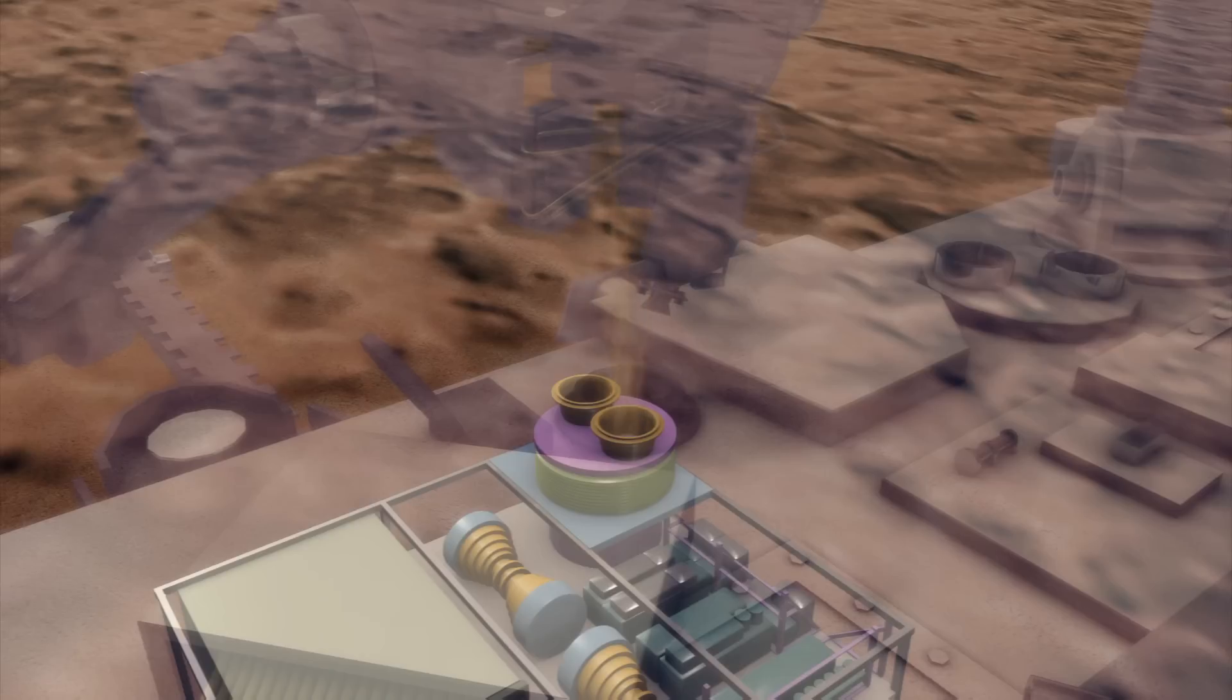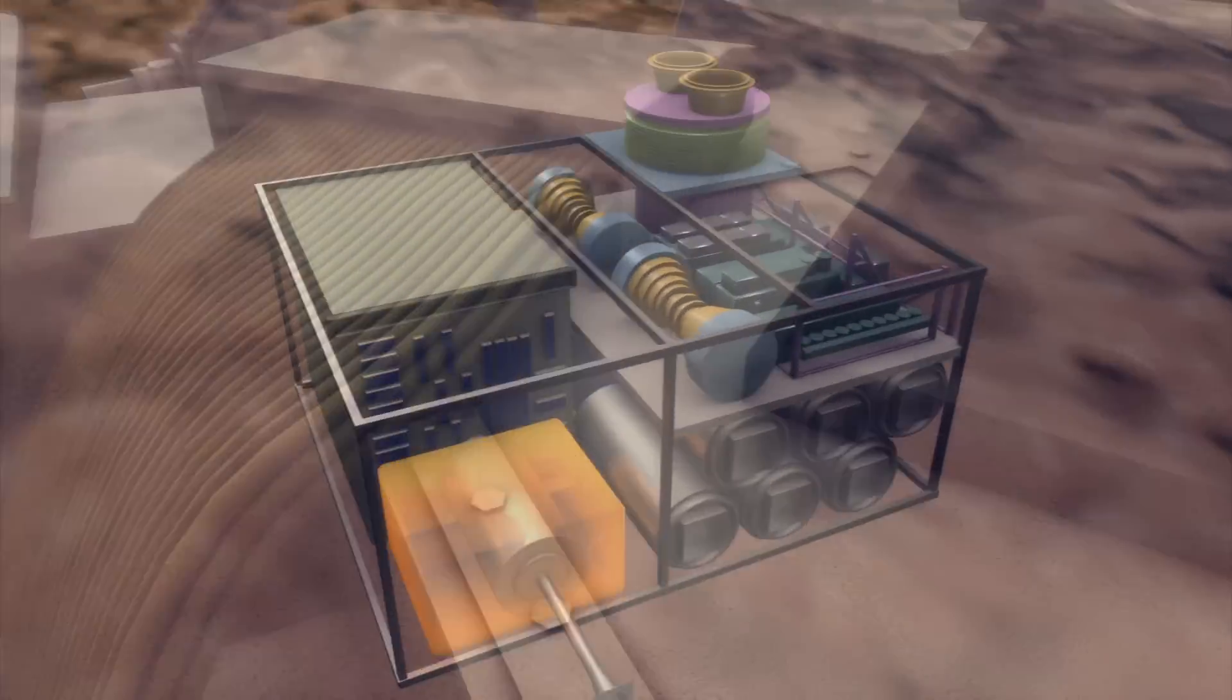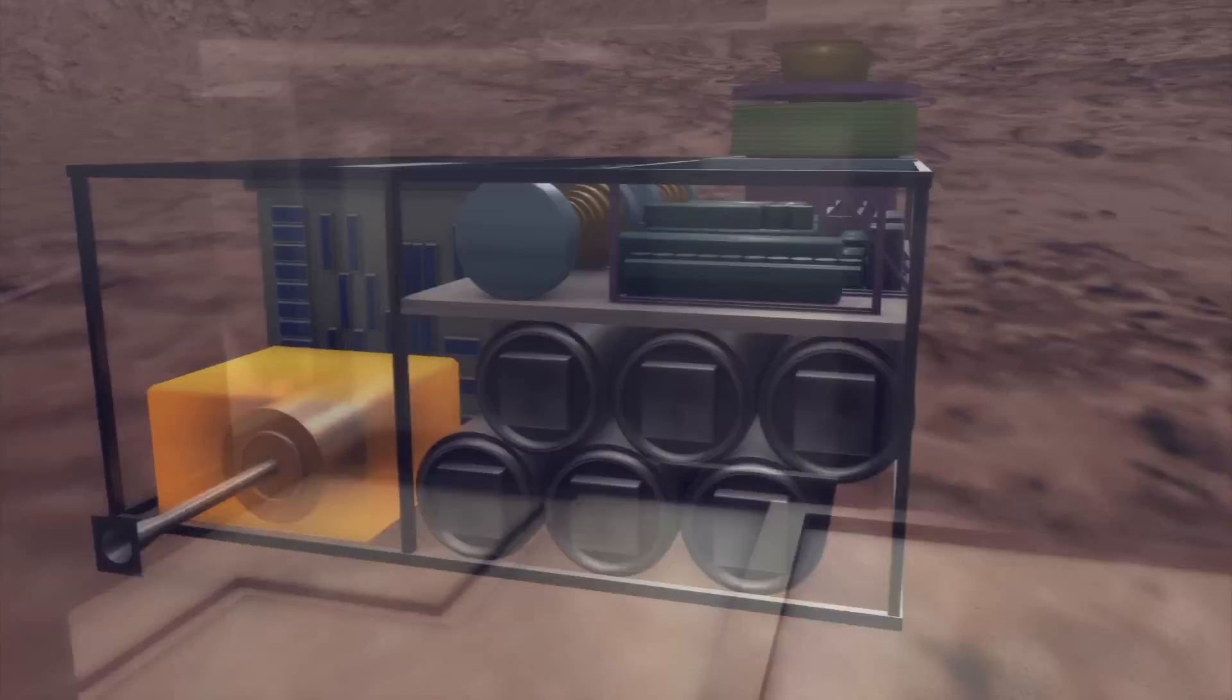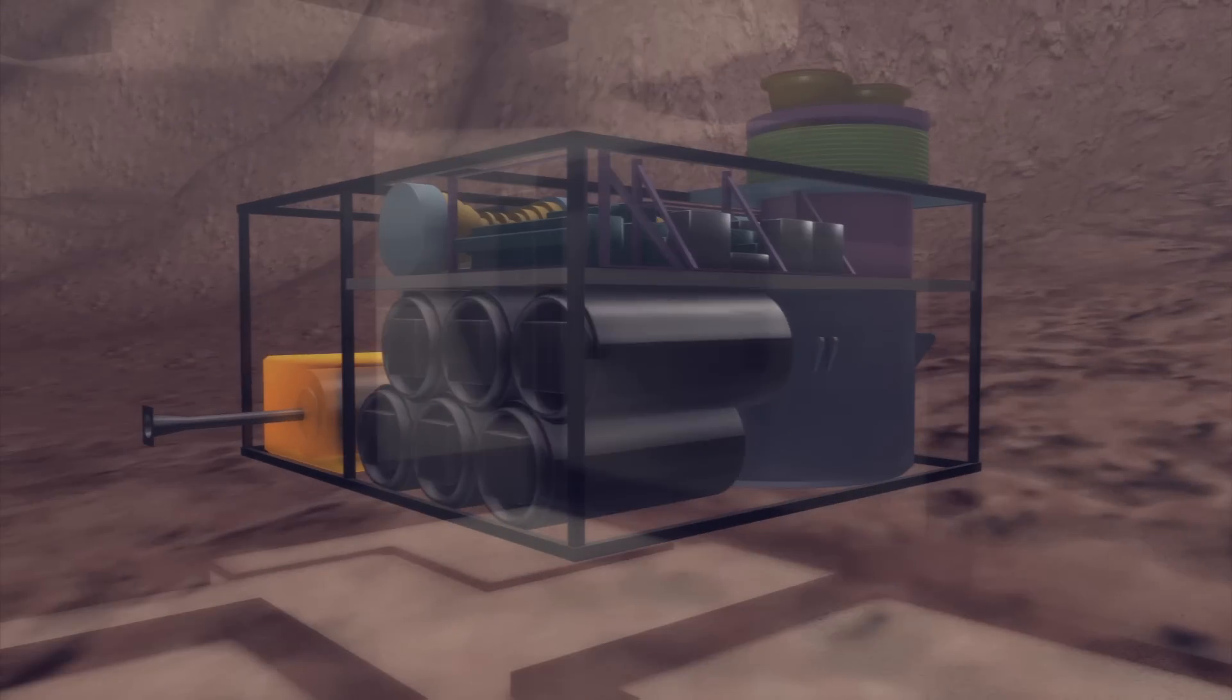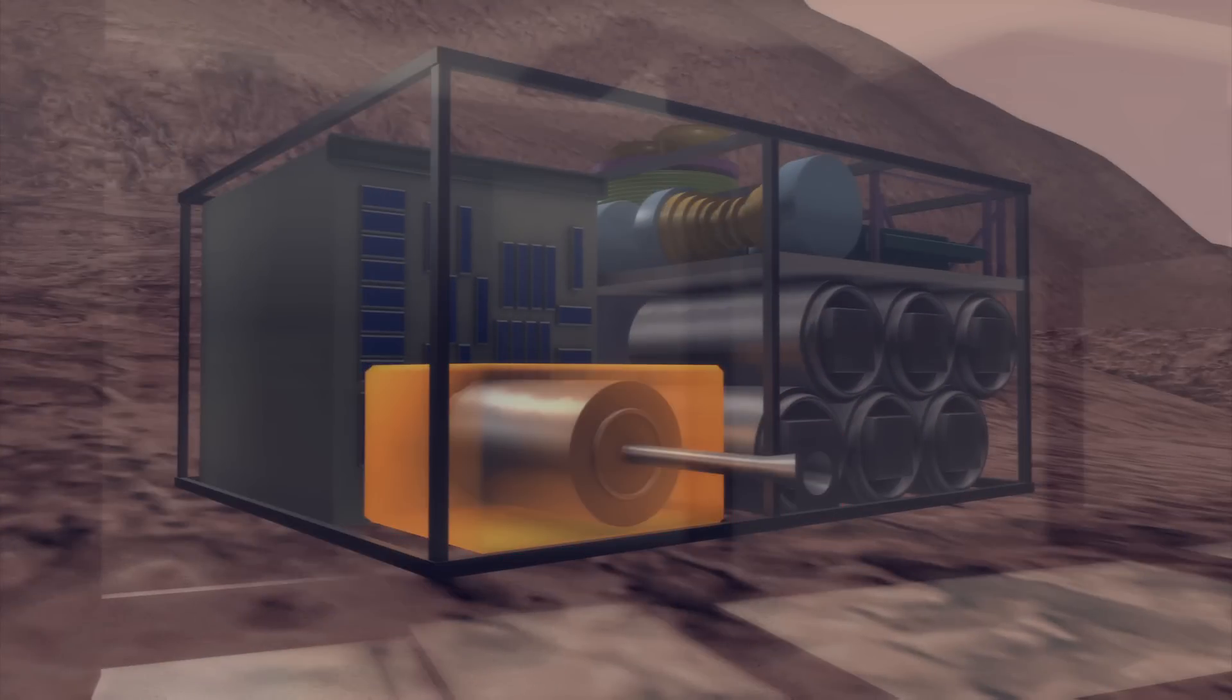Samples will be collected and analyzed inside the rover's sample analysis of Mars instruments, which includes a sample manipulation system, quadrupole mass spectrometer, gas chromatograph, and laser spectrometer.